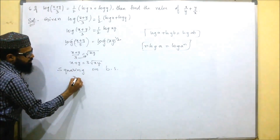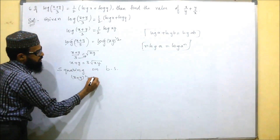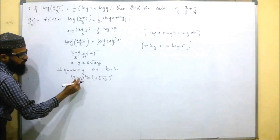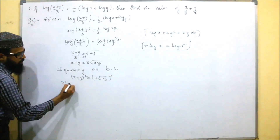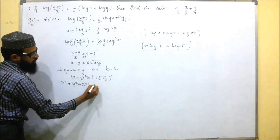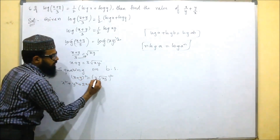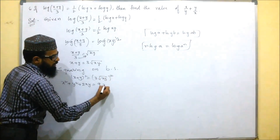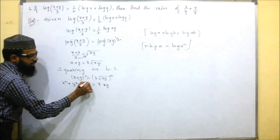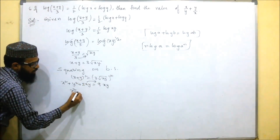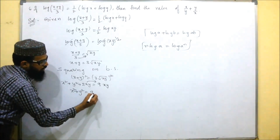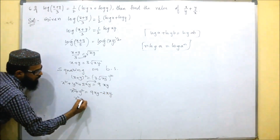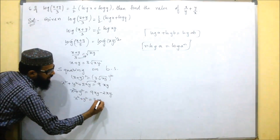Squaring both sides gives (x + y)² = (3·root(xy))². Expanding using (a + b)² = a² + 2ab + b², we get x² + y² + 2xy = 9xy. Sending 2xy to the right side: x² + y² = 9xy − 2xy = 7xy.